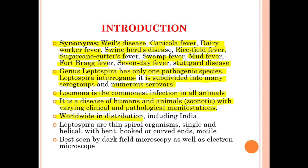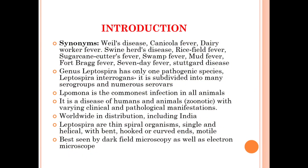The worldwide distribution of Leptospira includes India. Leptospira are thin spiral organisms, single and helical with bent, hooked, or curved ends, and they are motile. They are best seen by dark field microscopy as well as by electron microscope.